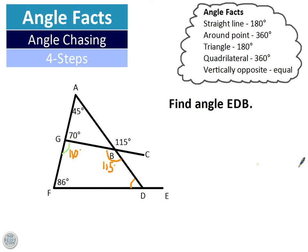So 110 plus 115 plus 86 is what we need to do. And that adds up to 301 degrees. So they all add up to 301.